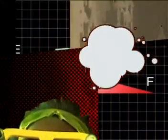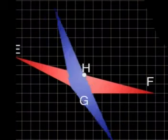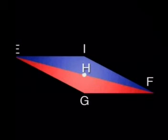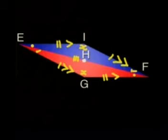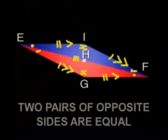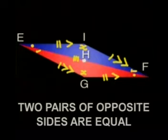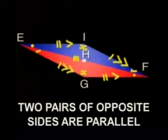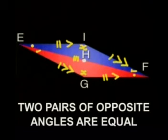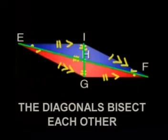Let's look again at what was covered in this lesson. We created our parallelogram by rotating the scalene obtuse angle triangle around the midpoint H for 180 degrees. We can now say that a parallelogram is a special quadrilateral where two pairs of opposite sides are equal, two pairs of opposite sides are parallel, two pairs of opposite angles are equal, and the diagonals bisect each other.